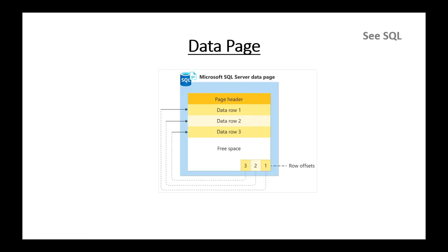This is the structure of a data page. In this page, 8KB of each page is reserved — 96 bytes for the system information and the rest for the data. This contains a page header with information about the page and data rows. The page header contains the system information and the rest of the area is used for data storage.